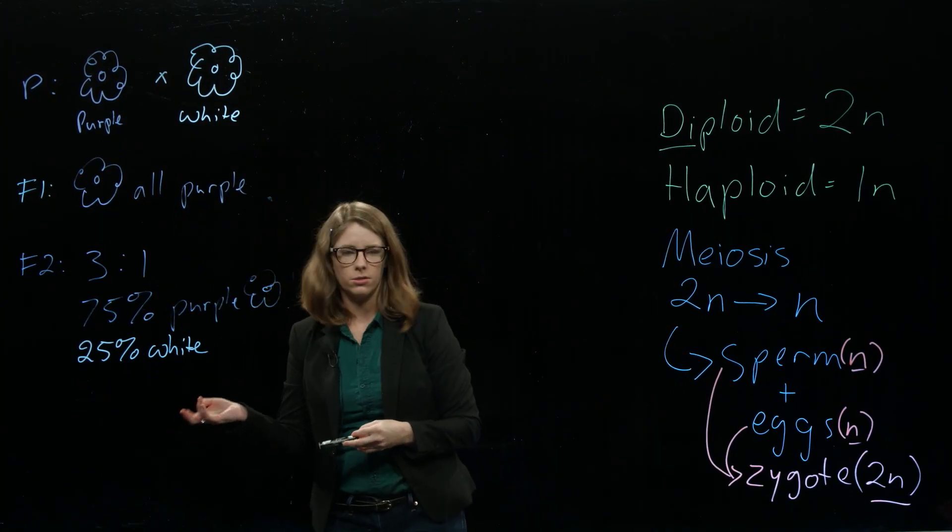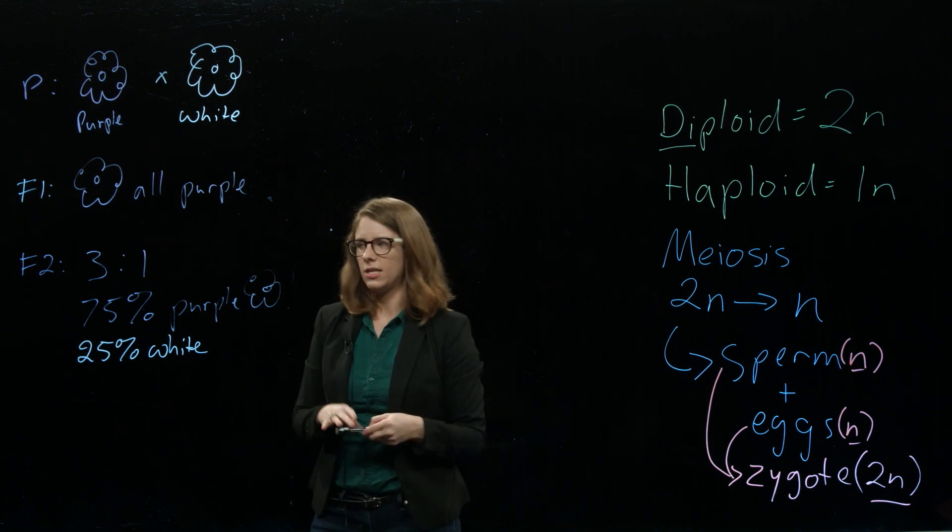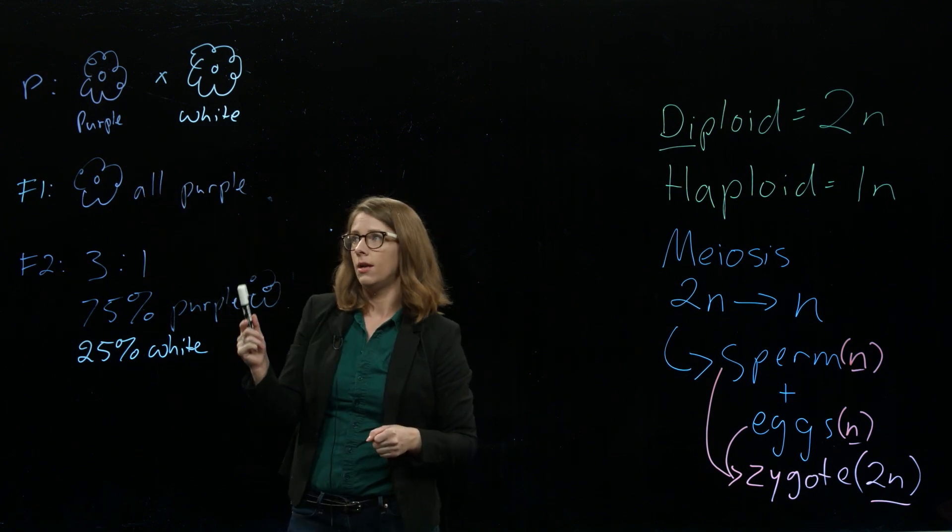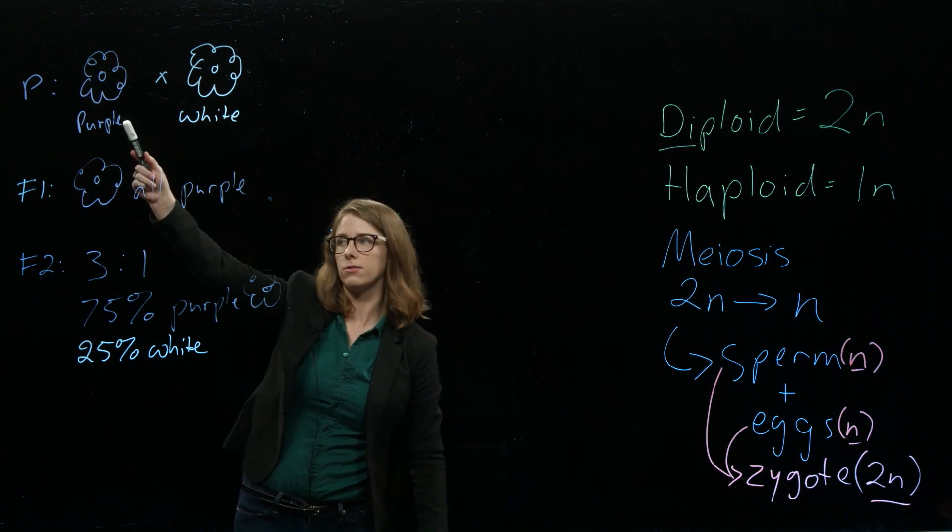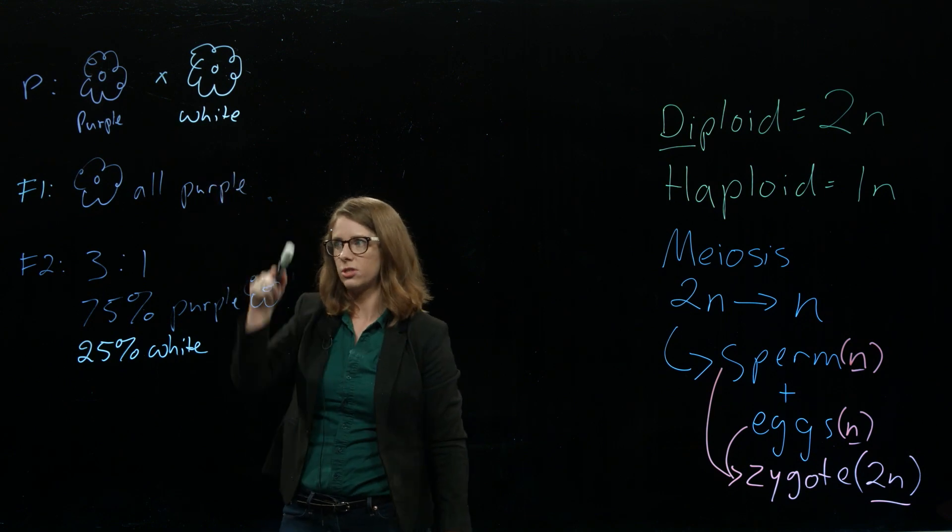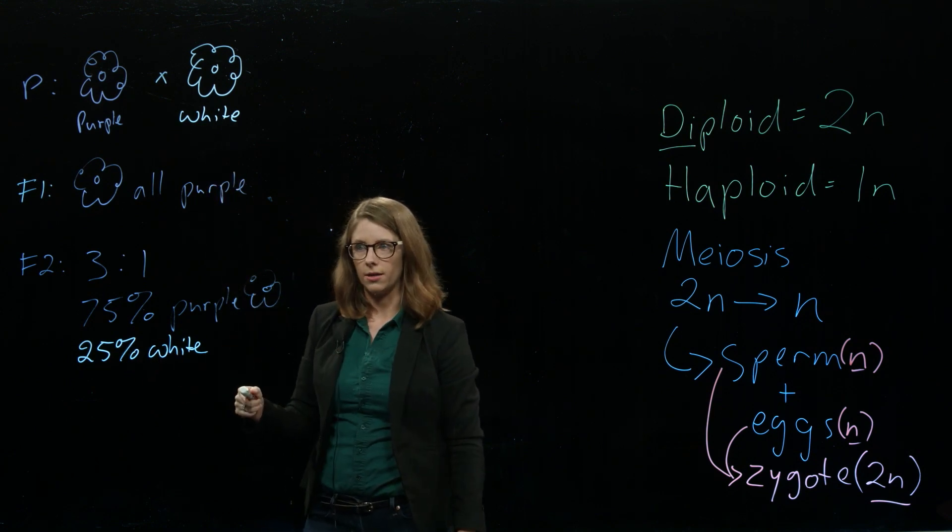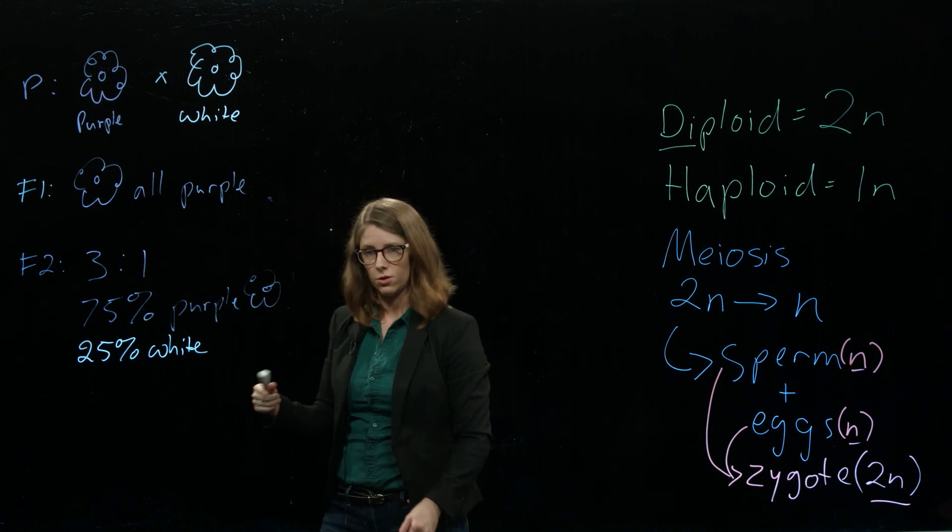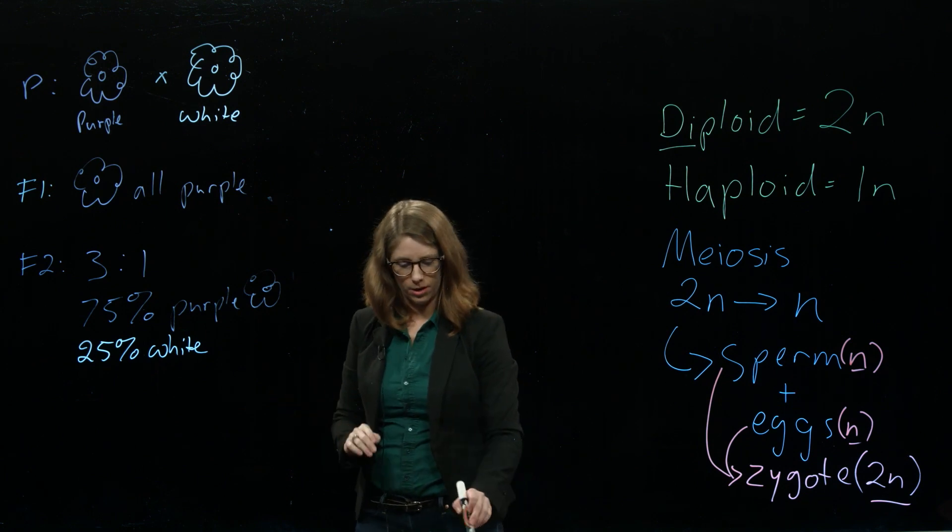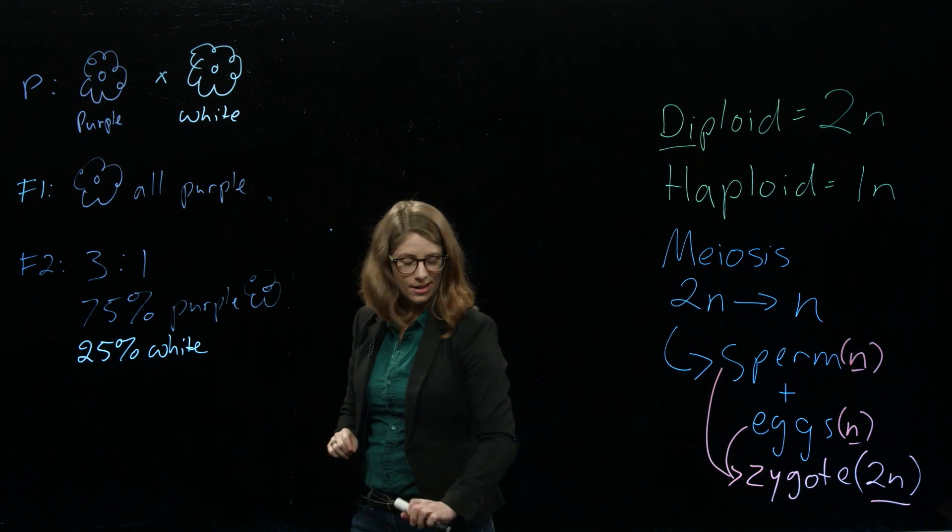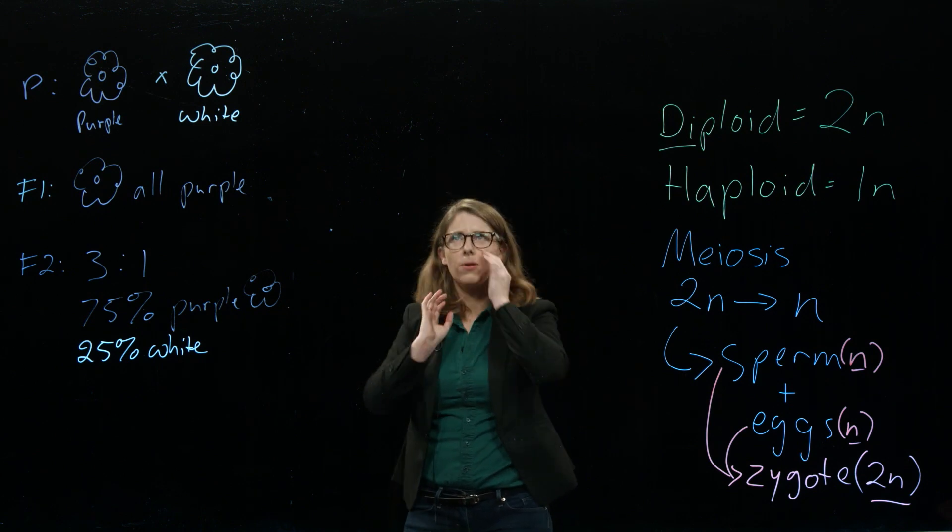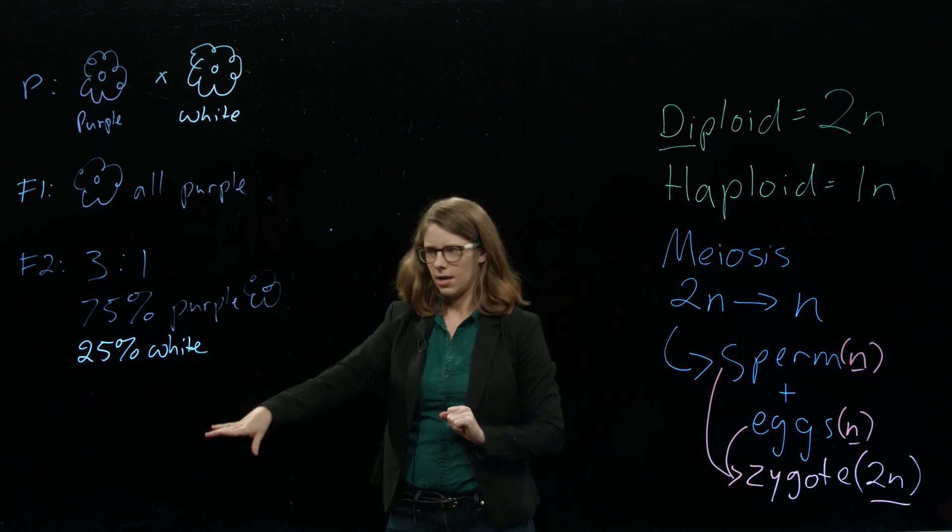And he actually saw this with a bunch of different traits. He looked at the pea color and the pea texture, and all these other traits. And he always saw the same pattern where you cross two parents that the traits are totally different. The next generation, they all took after only one of the parents, but then the following generation, this trait came back. It's kind of like this color, the white color skipped a generation. It came back in this generation down here at this, it's consistently this three to one ratio. He saw this over and over and over again with all these different traits.